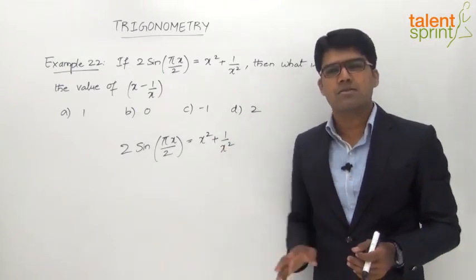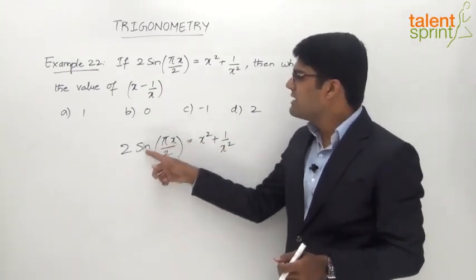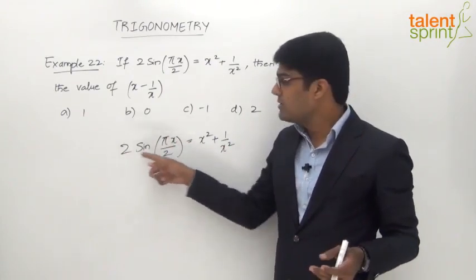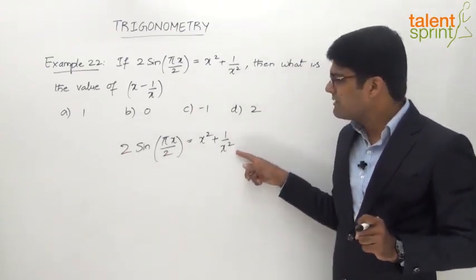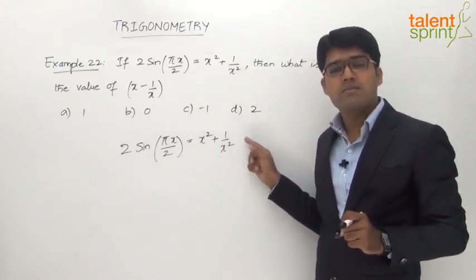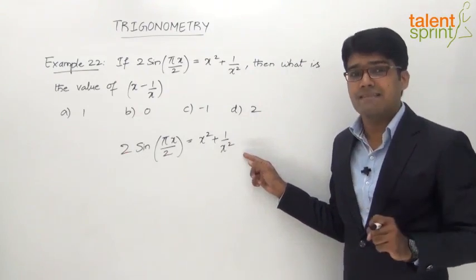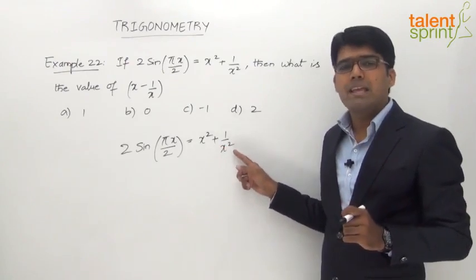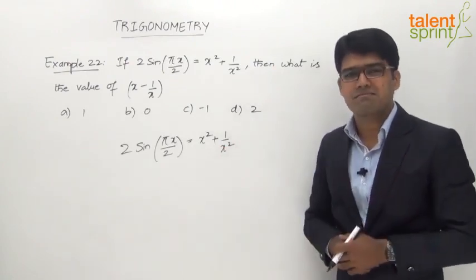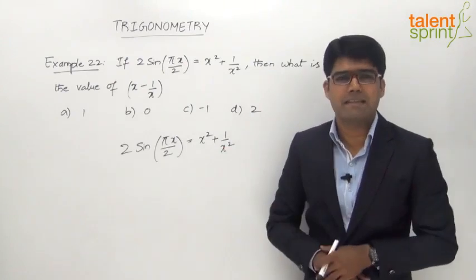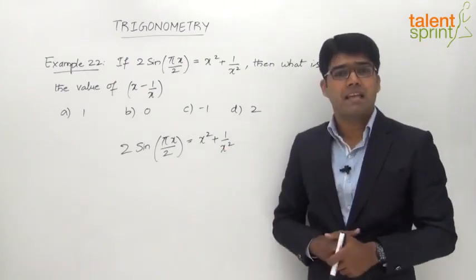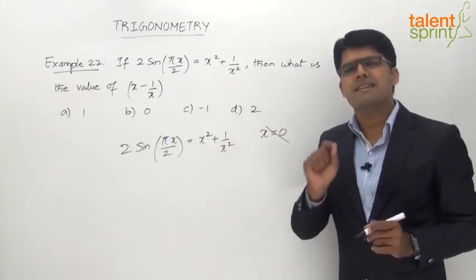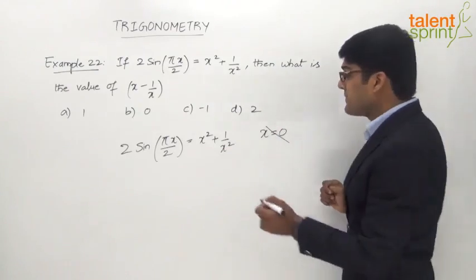Let's try with 0, that's the easiest one to start with. x = 0. If this is 0, sin(π/2 × 0) = sin(0) = 0, so 2 × 0 = 0. But what do we have on the right hand side? x² + 1/x². We have taken x as 0, so 0² is 0 plus 1/0 which is undefined or infinity. Clearly the equation is not balanced with x = 0, so x = 0 fails to satisfy the given equation.